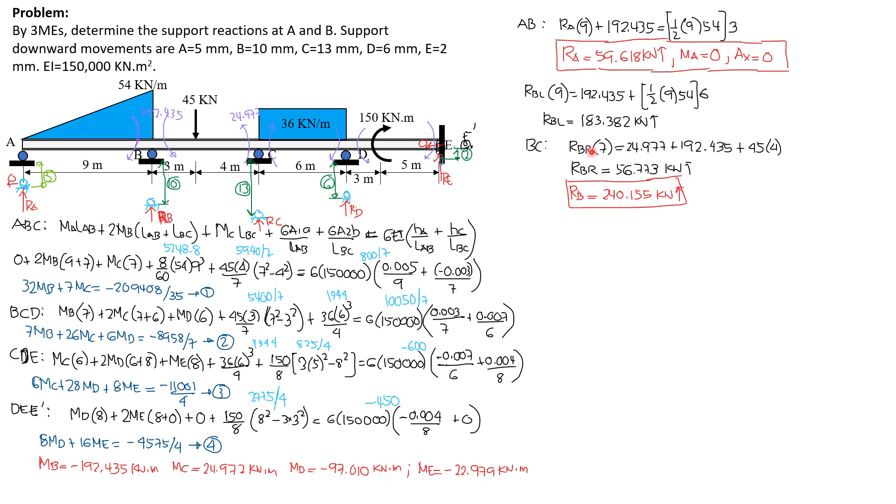Finally, RB is RB left plus RB right, adding, so we have 240.155 kN upward.